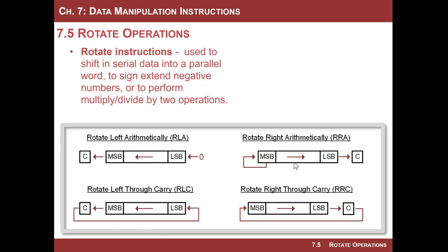If you look at rotate right arithmetically, this is an interesting one. The least significant bit rotates into the carry and then the most significant bit just copies itself back in. This is actually used for sign extending — where you have a negative or positive number and you want to manipulate it, like dividing by two. If you're working with a negative number you have a one in the most significant bit and you keep a one there while you rotate everything right. Same thing with a positive number. We'll take a look at an example of dividing and multiplying using rotates.